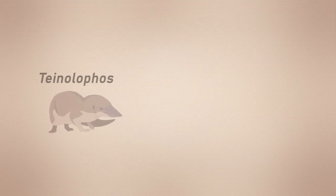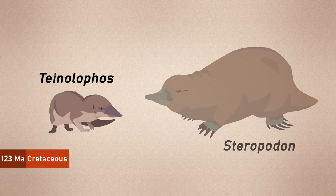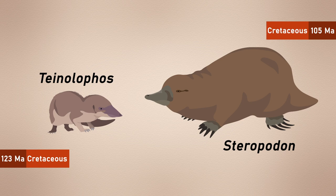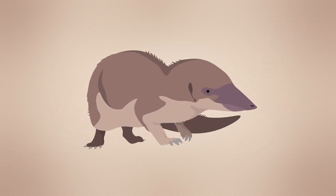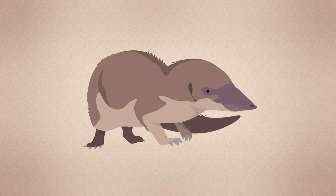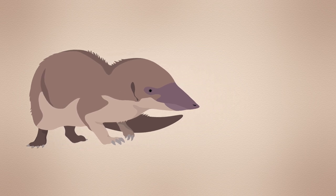The earliest monotremes known are the Cretaceous Tynolophus and Steropodon. If we are to assume that these resemble ancestral echidnas, we already run into problems. Tynolophus, for example, was a small insectivorous creature, likely weighing no more than 200 grams, similar in size to a brown rat.